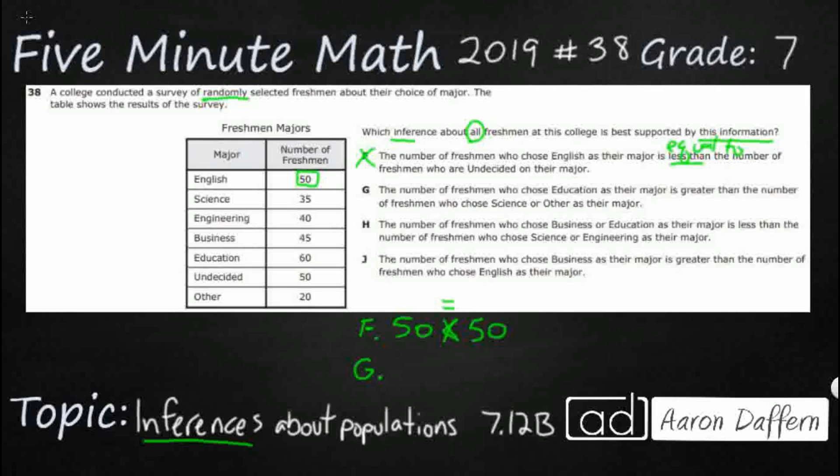G, the number of freshmen who chose education as their major - education is 60 - is greater than the number of freshmen who chose science or other. When you get two of these options, you end up adding them. Science is 35 and other is 20. So 60 is greater than 35 and 20, which is 55. That looks okay. So it's not F, G looks okay. Obviously before we answer that, we've got to check H and J. Let's go ahead and do that, make sure those are incorrect.